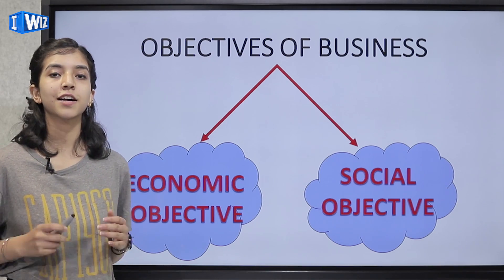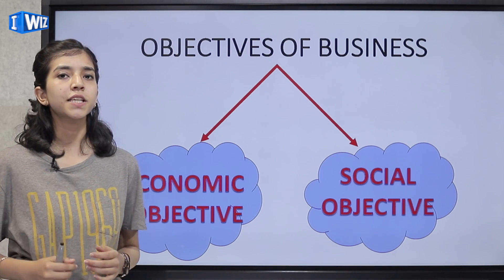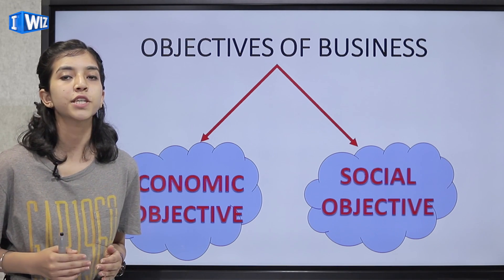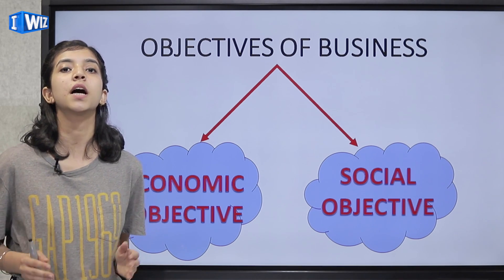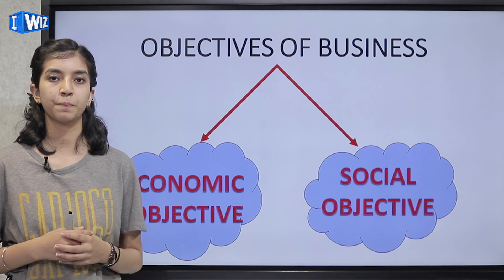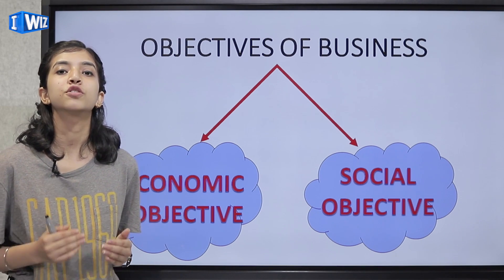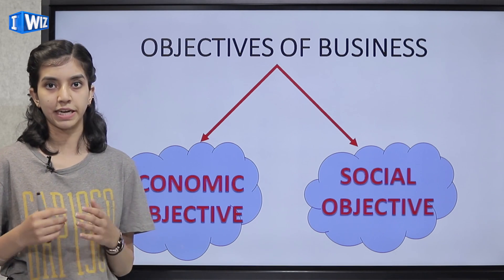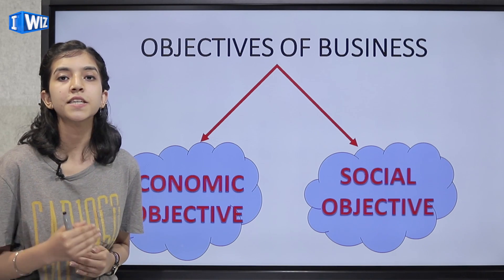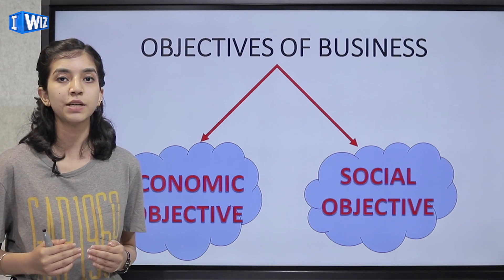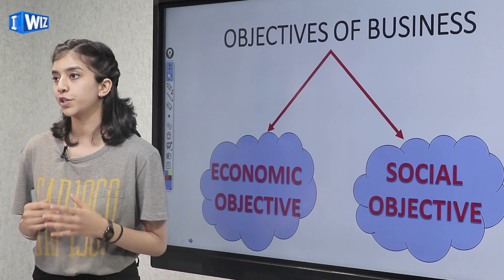Objectives of business are classified into economic objectives and social objectives. Economic objectives are those objectives which are money related — yeh wo objectives hote hai jinke bina ek business ke baare mein socha bhi nahi ja sakta. On the other hand, social objectives are those objectives which fulfill a business's responsibility towards the society. A business is part of society, and it is really very important for business to fulfill social responsibilities.